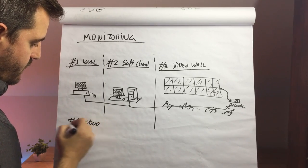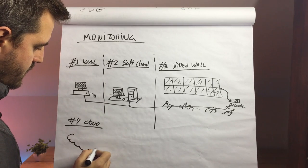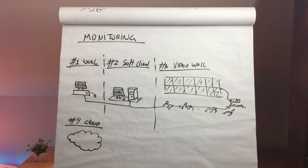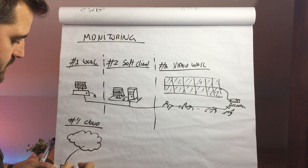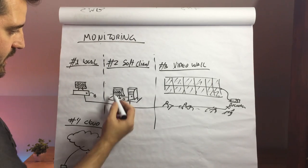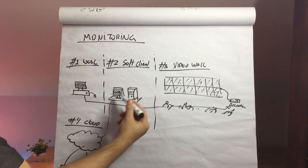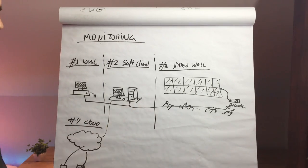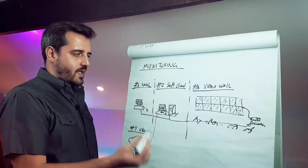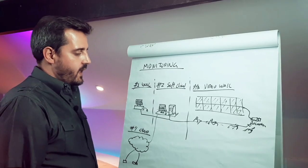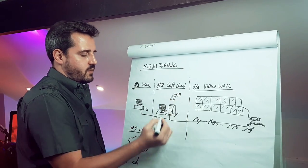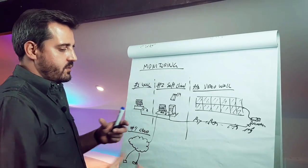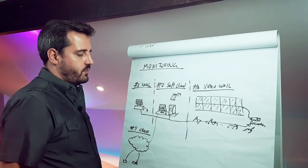Just as recording can be done by cloud, monitoring can also be done via cloud. Small NVRs or cameras connected directly to the cloud can be accessed by a computer via internet browser consuming the live feed. Depending on the size of the installation, this can work very well. Also worth noting under software clients: mobile devices — iOS and Android phones, iPads, or tablets — can use this type of monitoring as well.